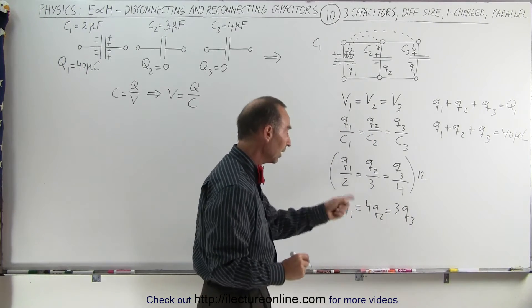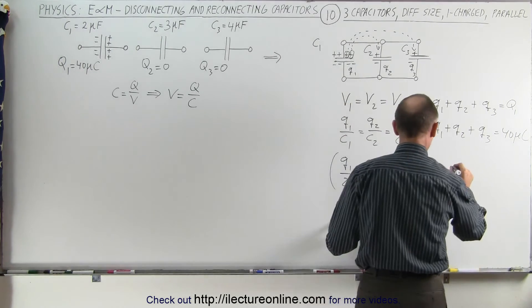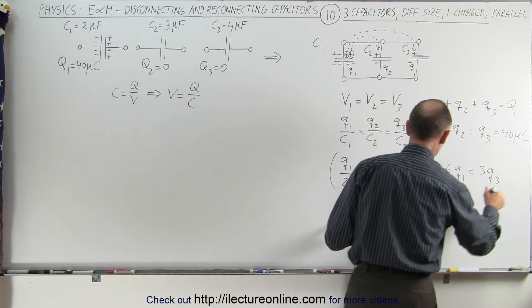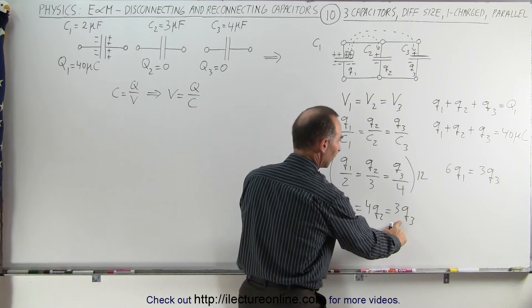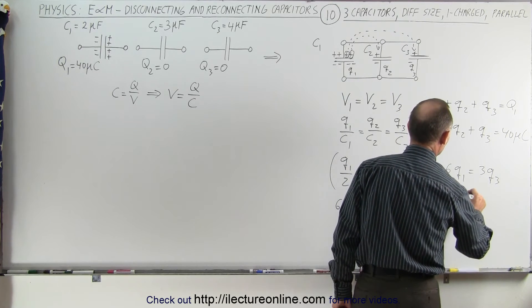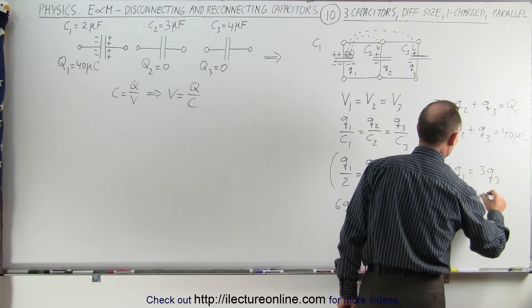From this relationship we can say that since 6q1 is equal to 3q3, when I set these two equal to each other I can therefore say that q3 is equal to 2q1.